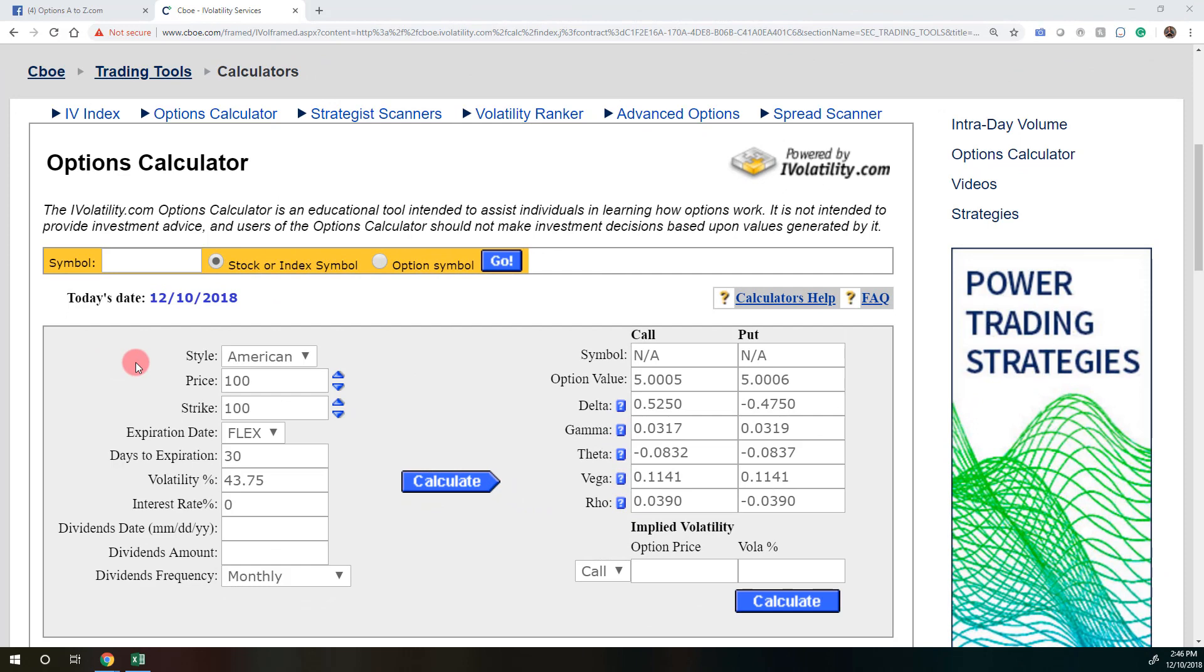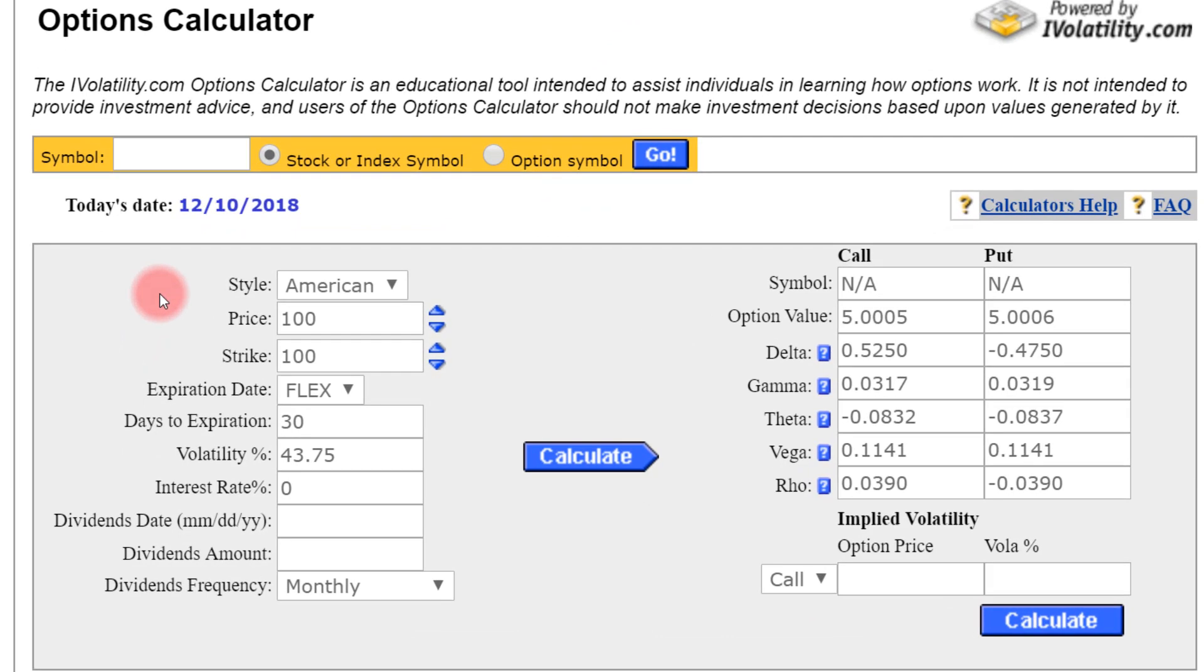All right, so here we are at the CBOE's Option Pricing Calculator. And you can get there probably the easiest by just going to Google and typing CBOE Option Pricing Calculator. And it should bring you to this page. But it's just an option pricing model that allows us to do some what-if scenarios. So I've chosen a stock price of $100, strike of $100, 30 days to expiration, and I've selected 43.75% volatility because that is the volatility necessary to create a $5 call option value, which is what I used in the example.